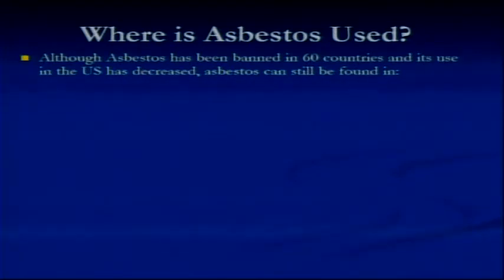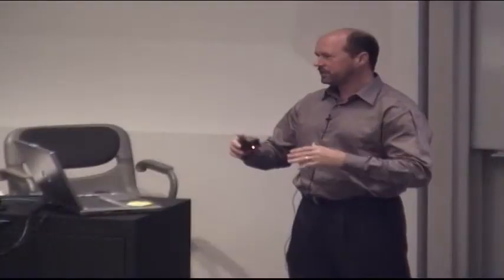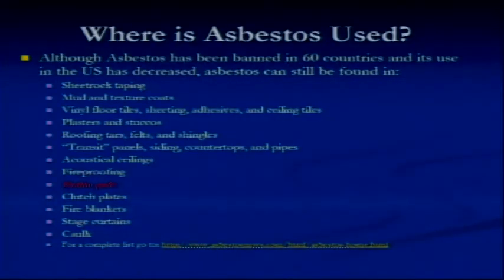So where is asbestos used? Most of us think asbestos has been outlawed, they don't use that anymore, it's gone, and it's just not in products today. Well, that's not true. It is used in products today. In fact, you'll still find asbestos in these components: sheet rock taping mud and texture coats, vinyl floor tiles, sheeting, adhesive, plasters, stucco, brake pads.